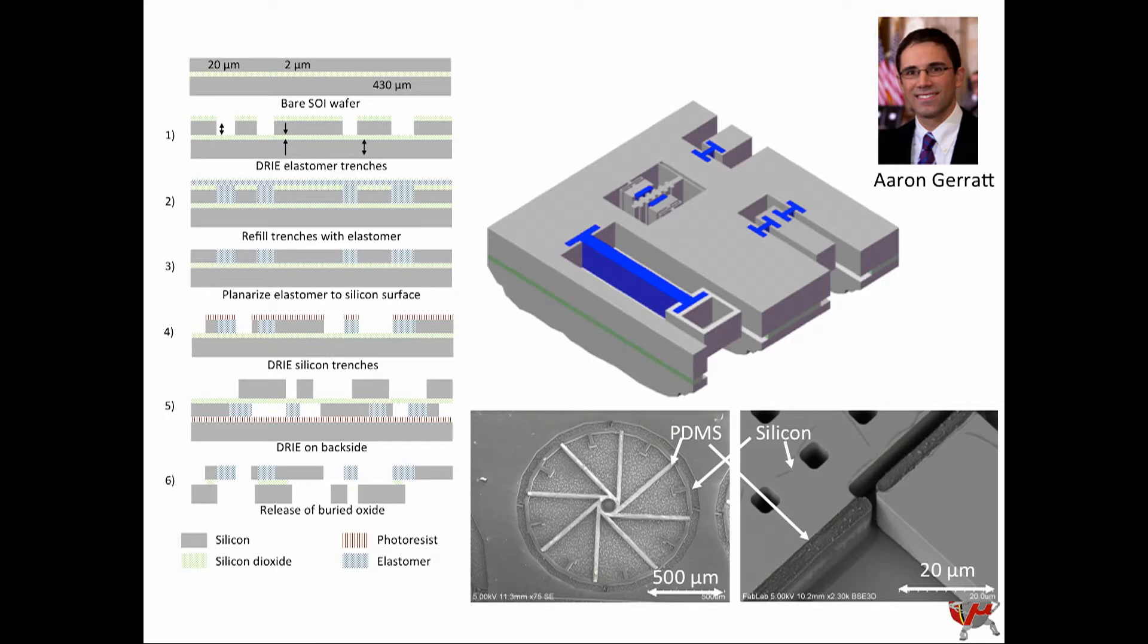So our big contribution has been to add soft materials to traditional microfabrication processes. So microfabrication allows us to get structures down to microns in size. Your hair is typically 50 to 100 microns in diameter for reference. And in this case, we can also take advantage of a lot of the sensors and actuators that people are already doing in silicon with our future micro-robots.